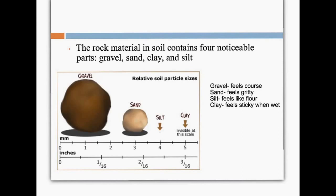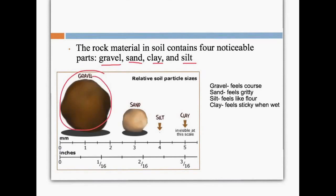The rocky material in soil is made up of four different parts, and you don't necessarily have to have all four: gravel, sand, clay, and silt. Gravel is our largest particle and it feels coarse. Sand feels gritty. Silt is very fine so it feels like flour. Clay's particle sizes are actually invisible but it feels sticky when wet and very smooth.